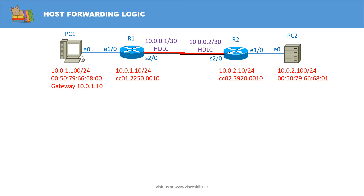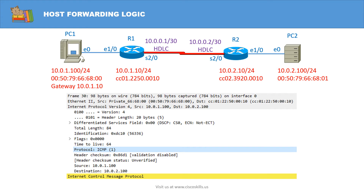In this example, we will use this network diagram. First of all, we logged into PC1 and ping the IP address of PC2. As you know, the ping command will generate an ICMP message, which is encapsulated into an IP packet on PC1. Here is the content of the IP packet: it has a source IP which is the IP address of PC1, and the destination IP is the IP address of PC2.